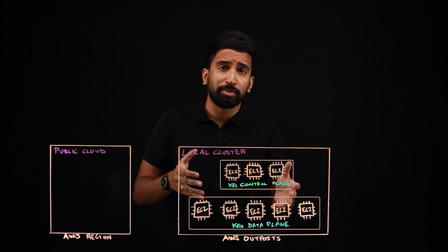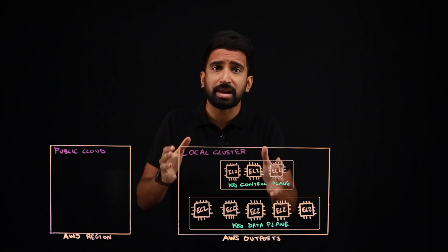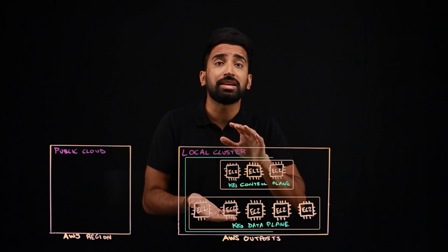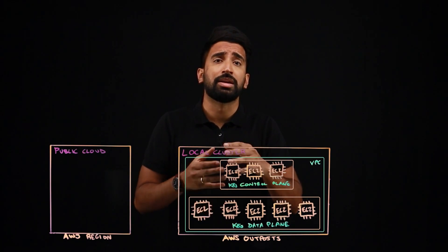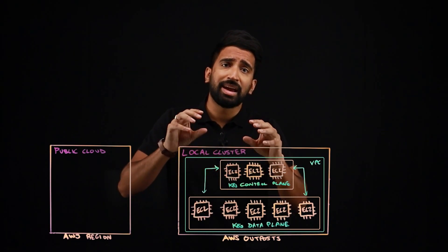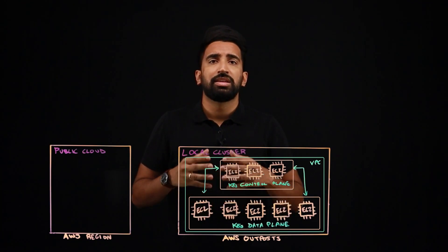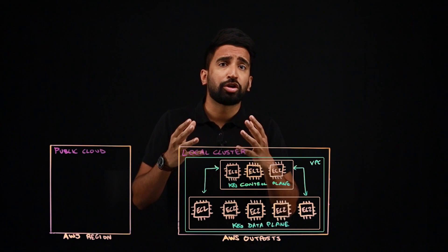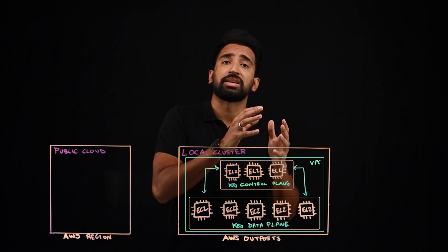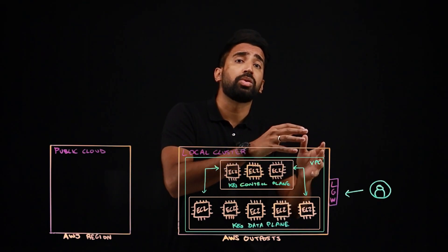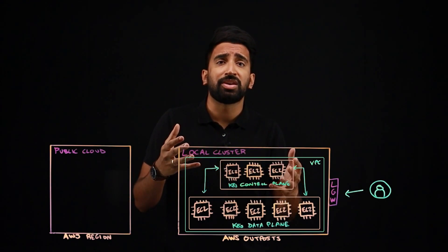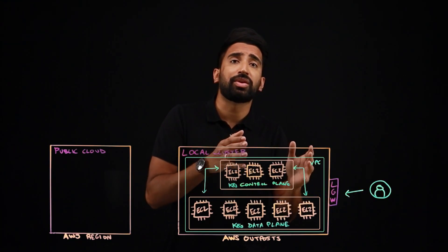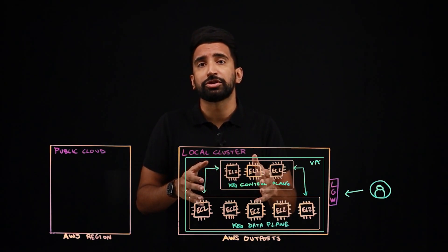As the Kubernetes control plane and worker nodes operate in the same customer account in the customer data center, the local VPC network enables communication between the Kubernetes control plane and the worker nodes. The clusters only support private endpoint access, and Kubernetes exposes the API server access through the local gateway. This is for connectivity from the local network, ensuring that only the right people can access and administer the cluster.